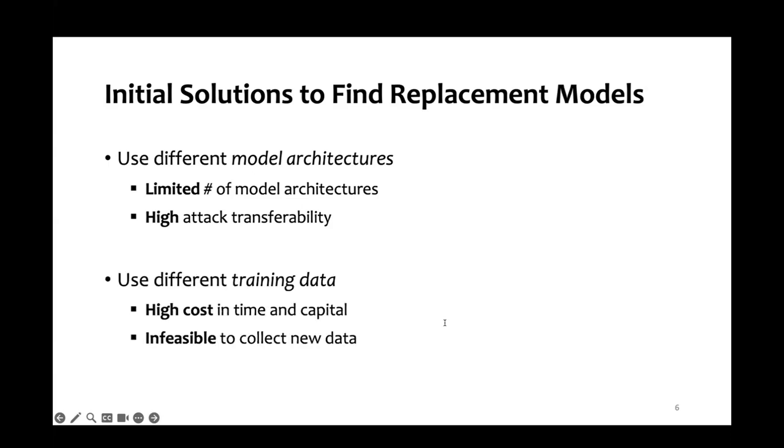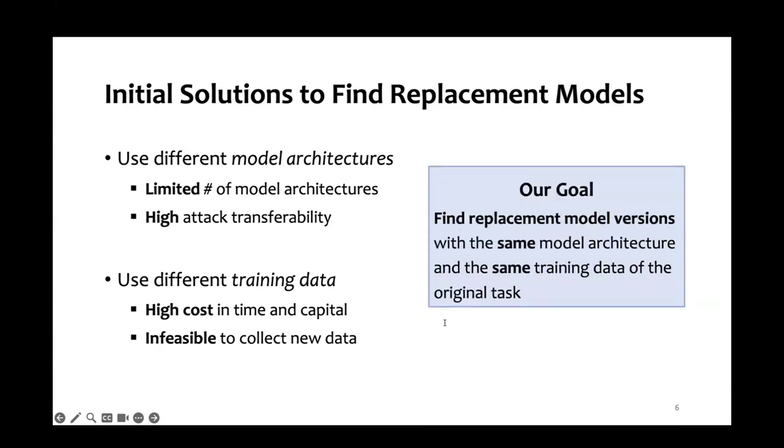What about we use different training data for different models? We all know that it takes a lot of time and money to curate a dataset. And in some cases, it's even infeasible to get new training data. For example, it takes years to curate a medical image dataset. With these practical constraints in mind, our goal is to find the replacement models without changing the model architecture or the training data of the original task.